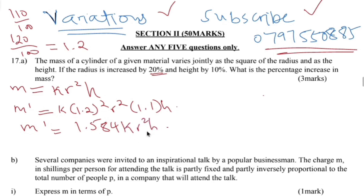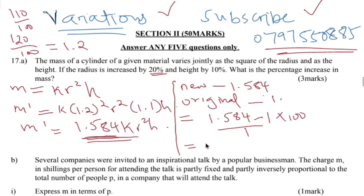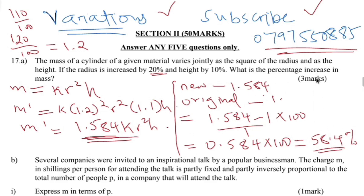So your new M is 1.584 and your original is always 1. To get the percentage increase, you take new minus original divided by original times 100. So 1.584 minus 1 gives 0.584, multiplied by 100 gives 58.4. So there is an increase of 58.4 percent. There is no need to specify 'increase' separately since the question already told you it is an increase. The answer is 58.4 percent.